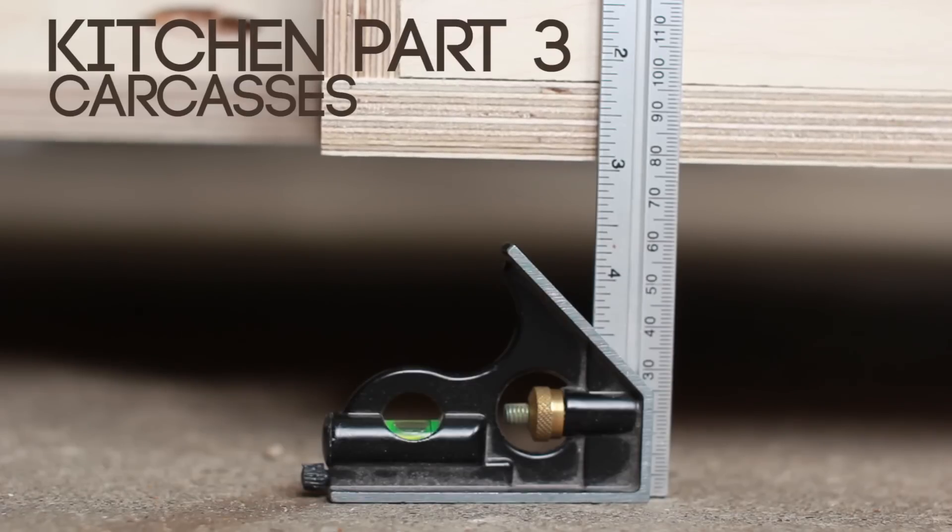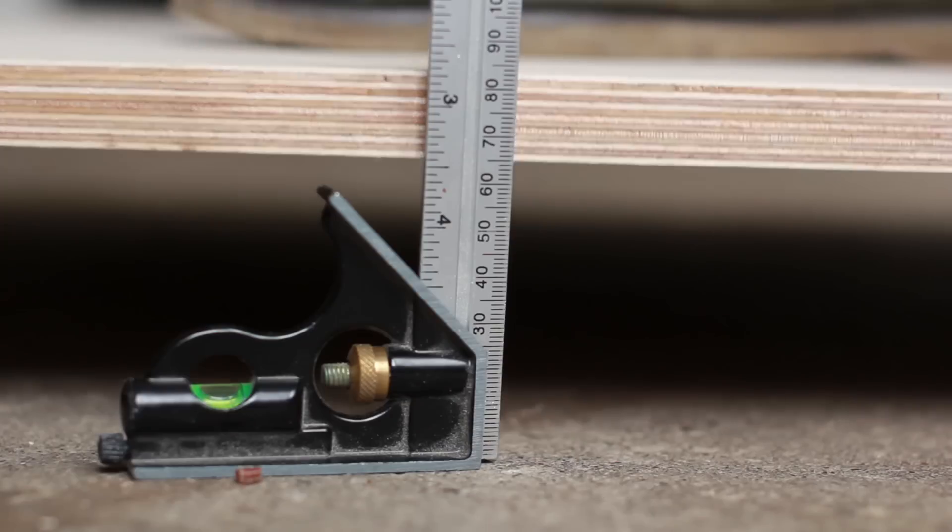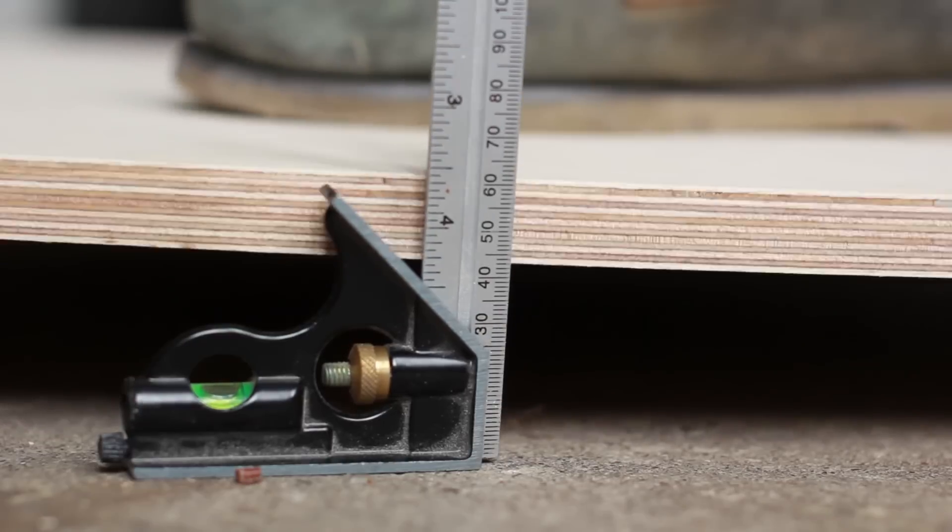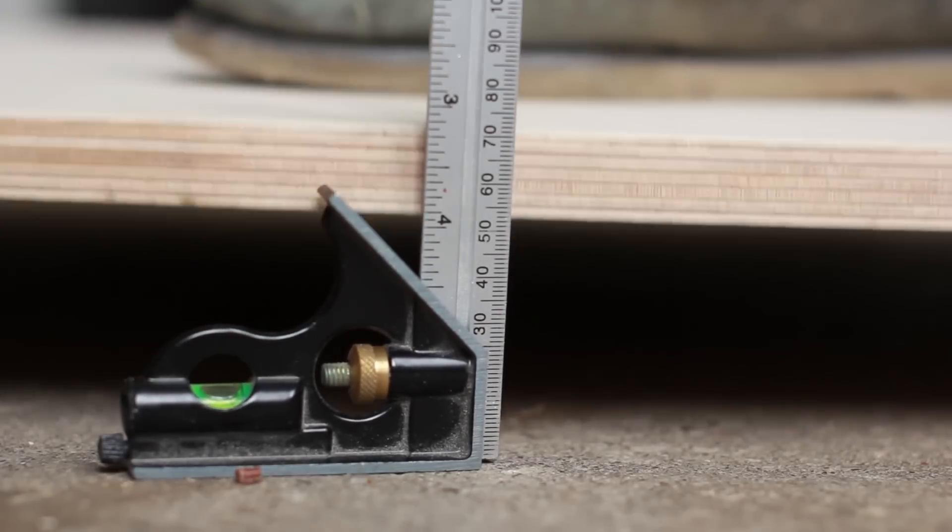After my last video a few people thought that the torsion box wasn't really necessary, but in this demonstration you can see the flex in the panel over the required span for both the torsion box and a plain sheet of three-quarter inch birch ply. The single sheet of ply was sagging under its own weight before I even stood on it.